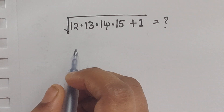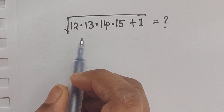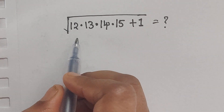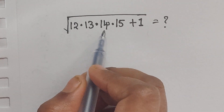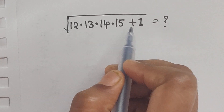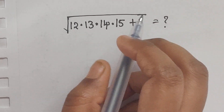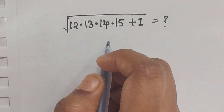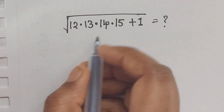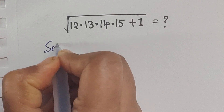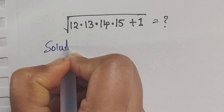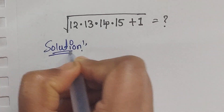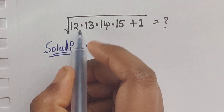Hello everyone, welcome back to our channel. Here we have one problem: the square root of 12 times 13 times 14 times 15 plus 1. How do we solve this problem? Let's see the solution.